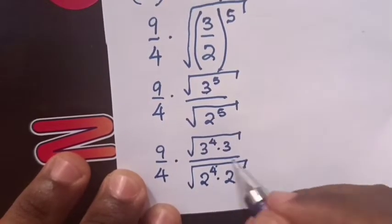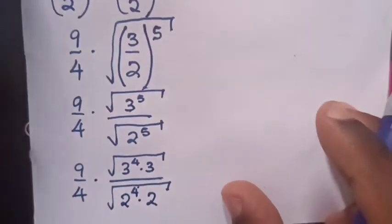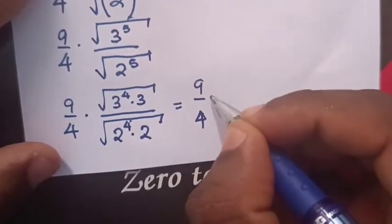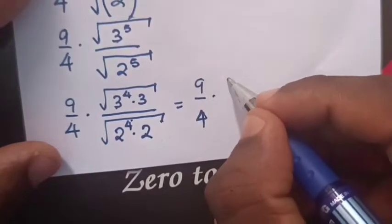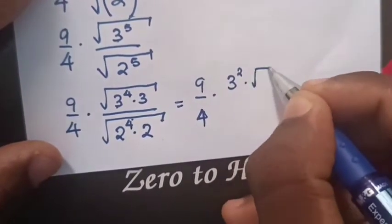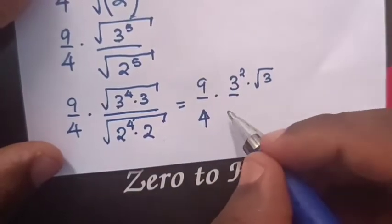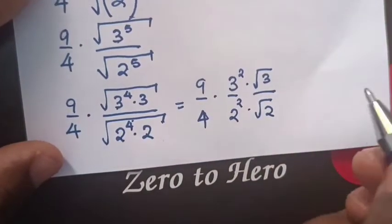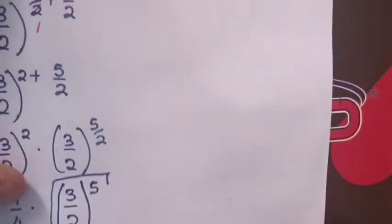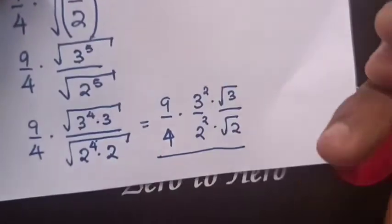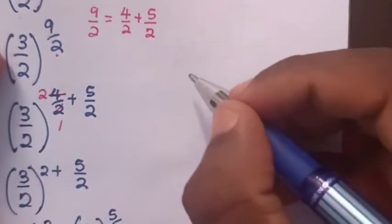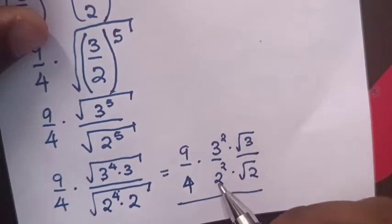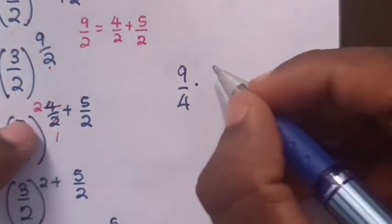Whereas 2 to the power 4 times 2 equals 2 to the power 5. Then our expression will be 9 over 4 times square root of 3 to the power 4, which equals 3 to the power 5, again times square root of 3, divided by square root of 2 to the power 4 which equals 2 to the power 2, times square root of 2. It will be 9 over 4, and 3 to the power 2 is 9, and 2 to the power 2 is 4, so times 9 over 4.